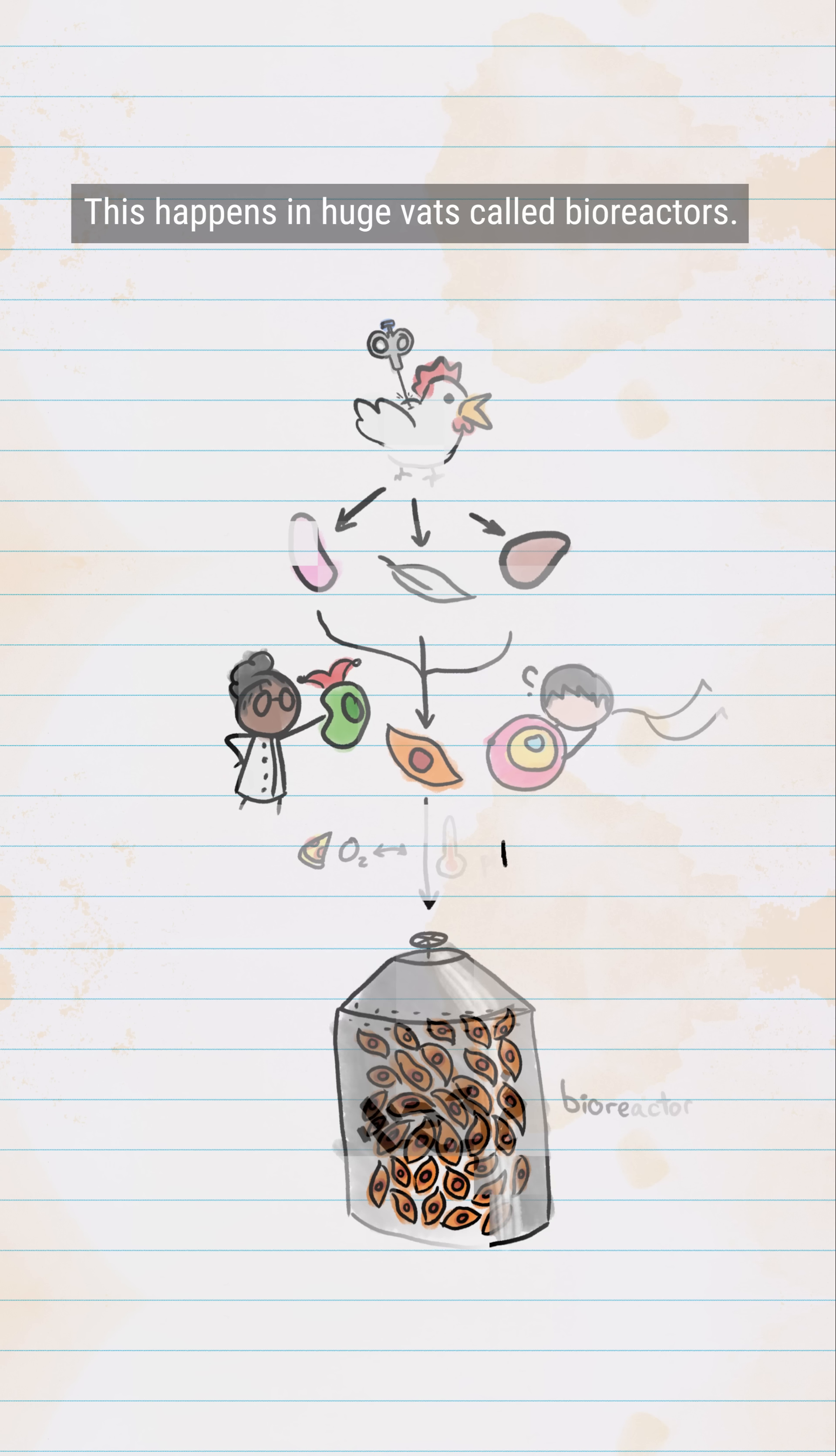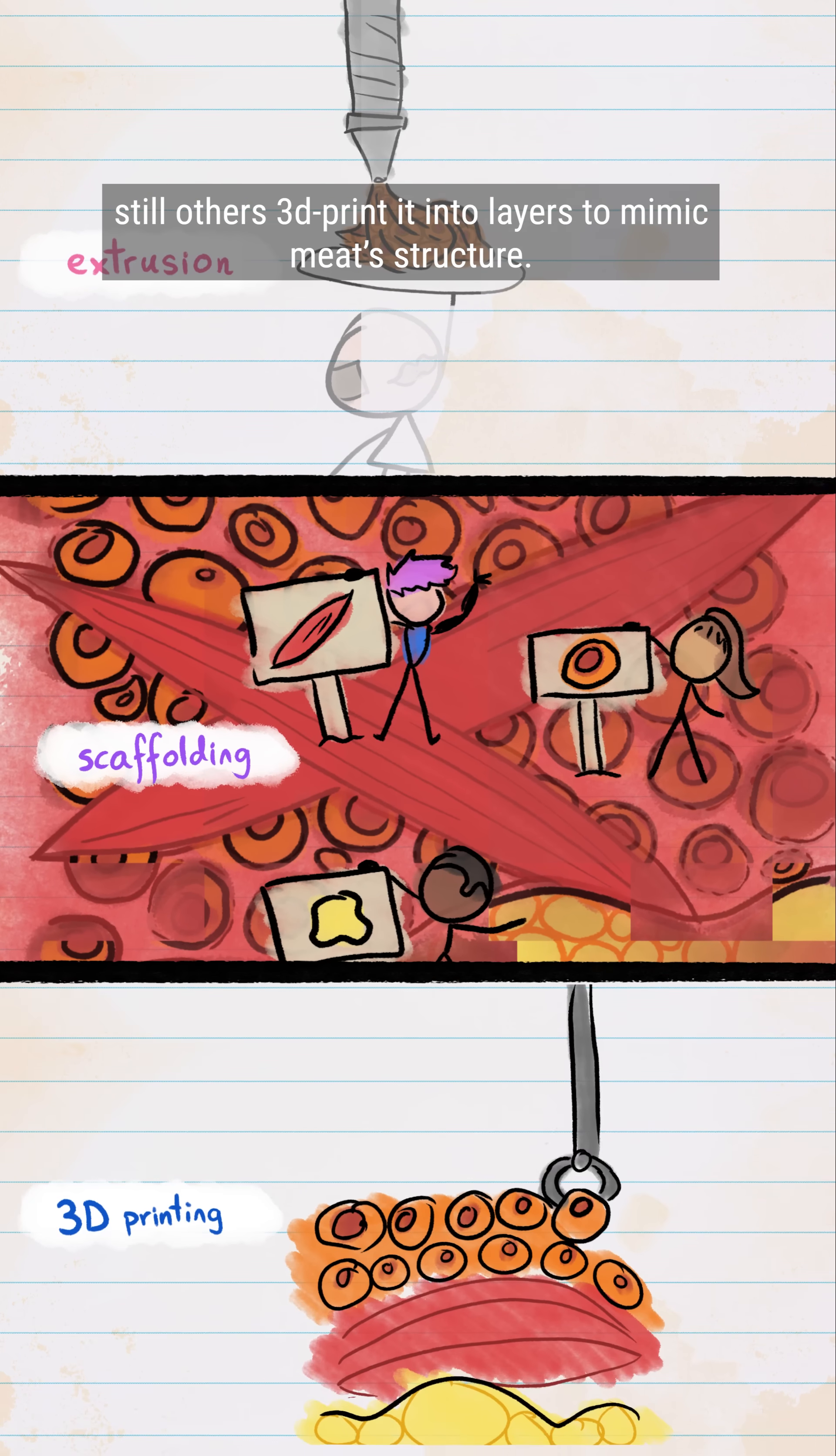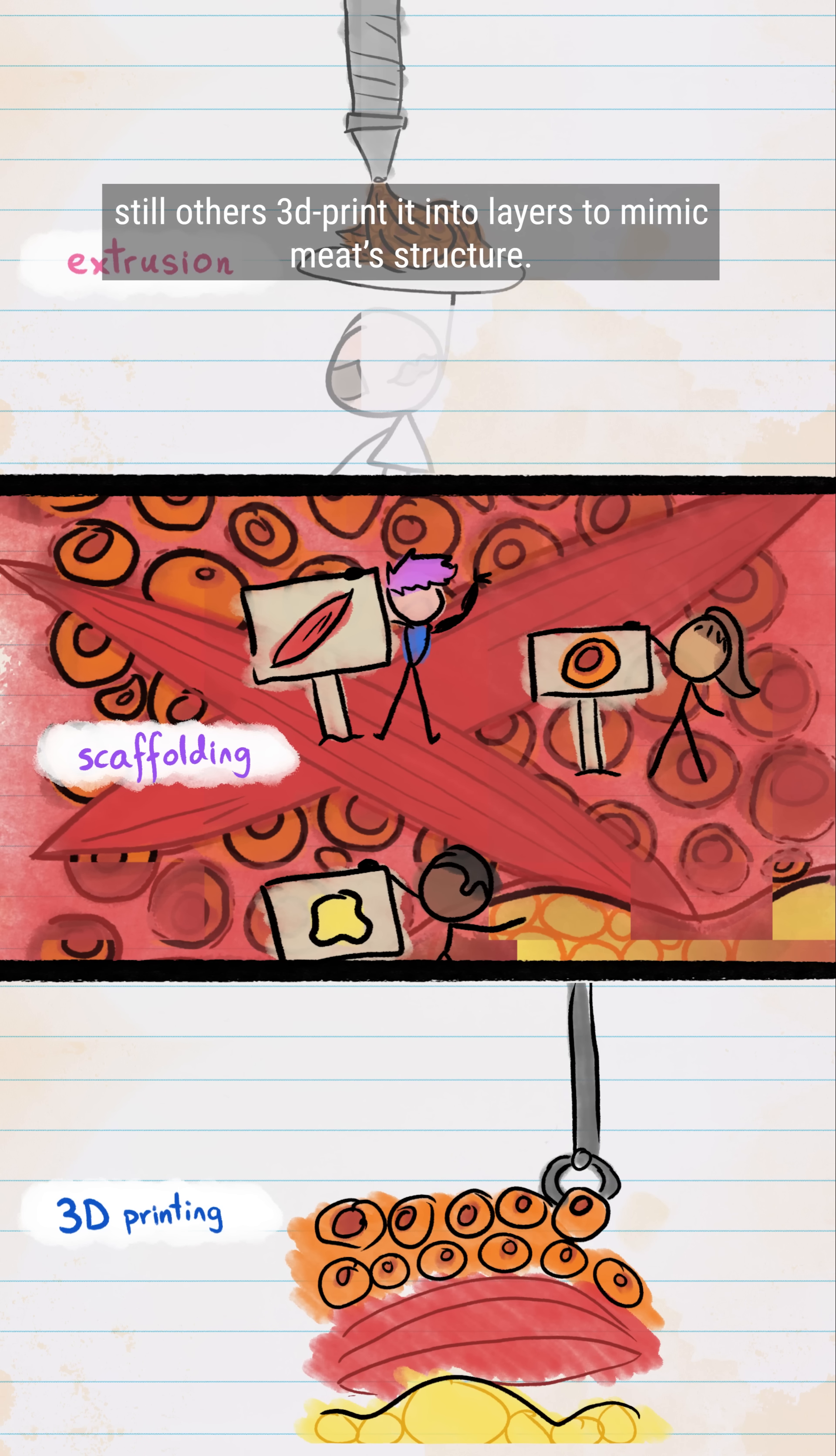This happens in huge vats called bioreactors. Some companies extrude the mixture into fibrous bundles, others turn it into muscle-like groups, still others 3D-print it into layers to mimic meat's structure.